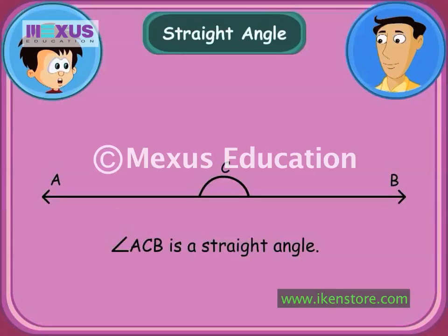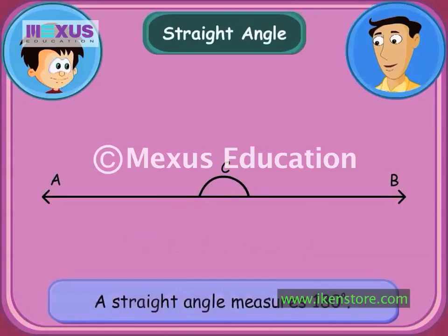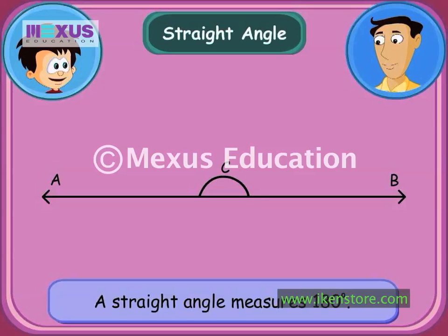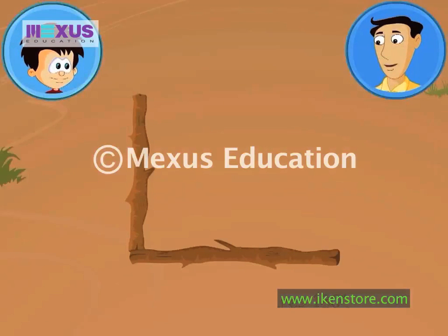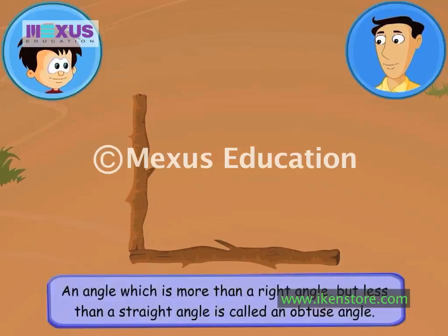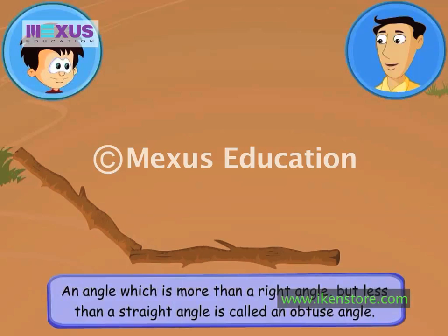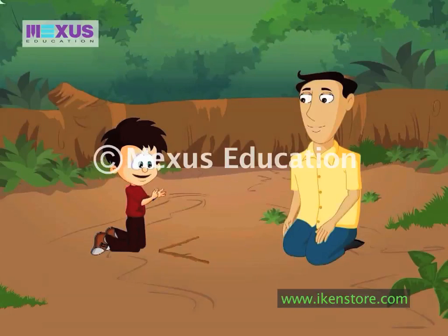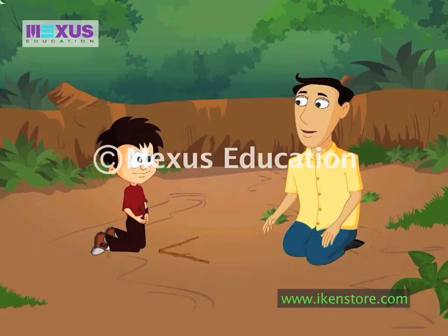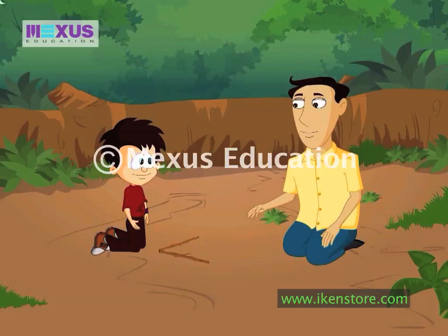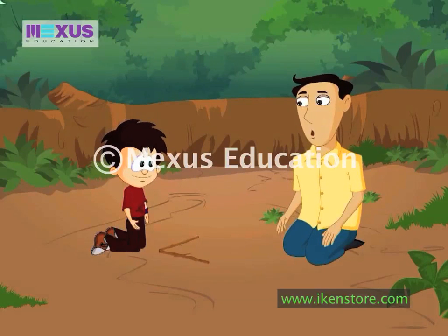Straight angle? Hey, that's easy. The measure of a straight angle is 180 degrees — it looks like a straight line. Are there any more angles? Yes, one more type of angle to remember. An angle which is more than a right angle but less than a straight angle is called an obtuse angle. Acute, obtuse, right and straight. Great. Look at the time, JC — come on, let's get going. You want to cross the lake on the raft or not? I'm sure Vishnu would have finished making it by now.